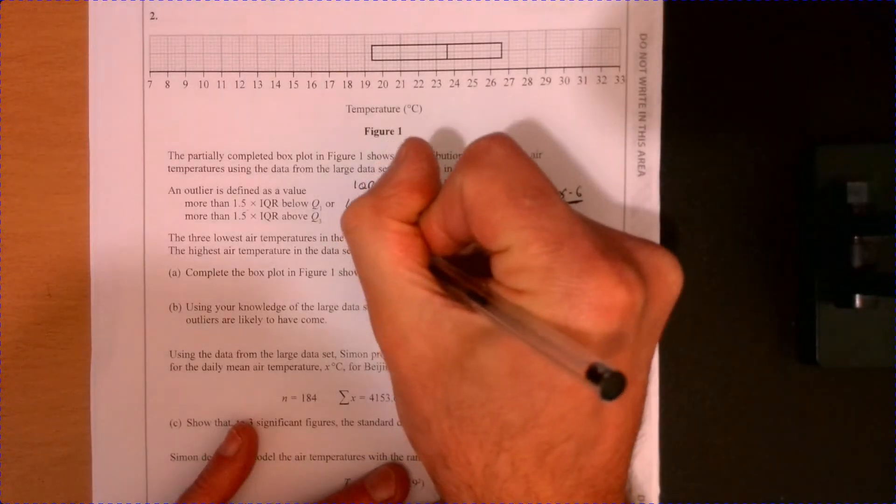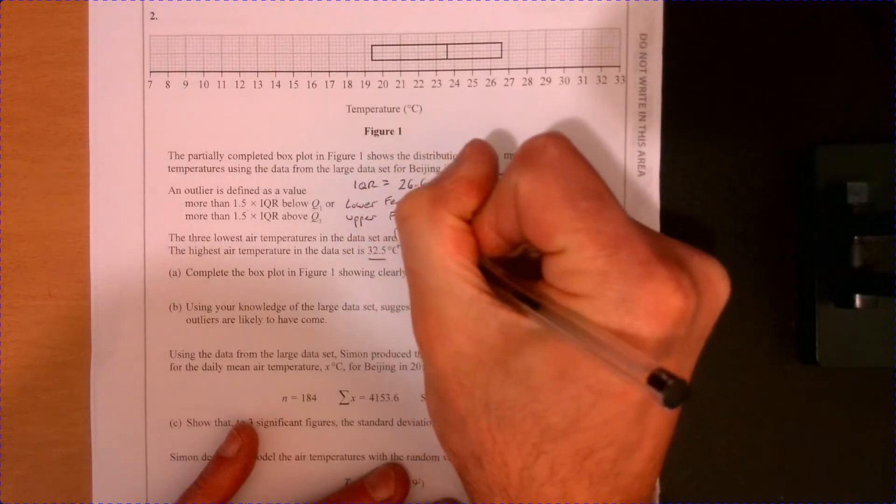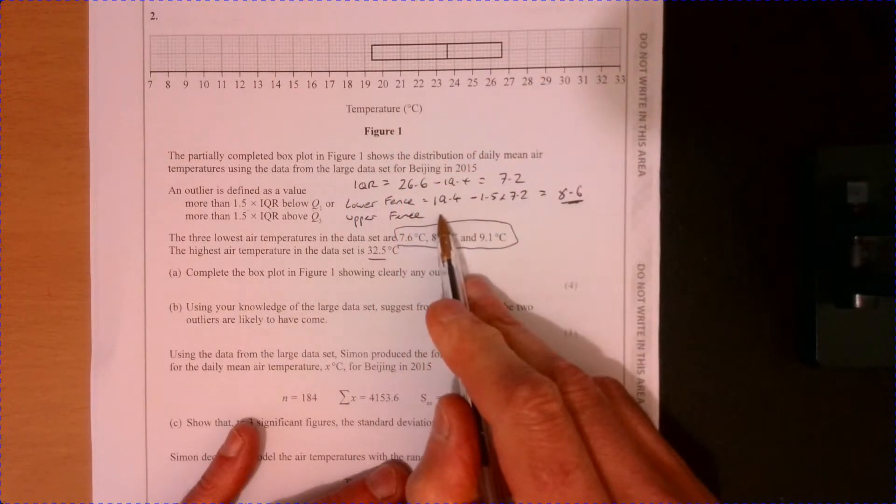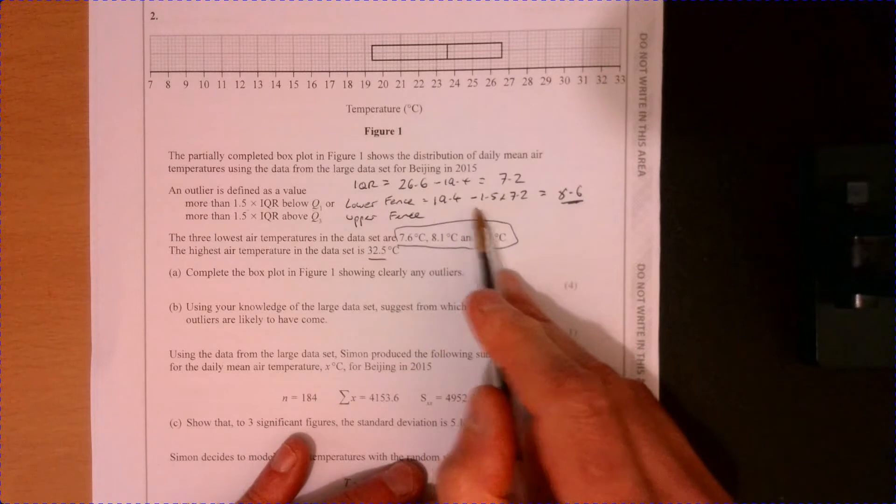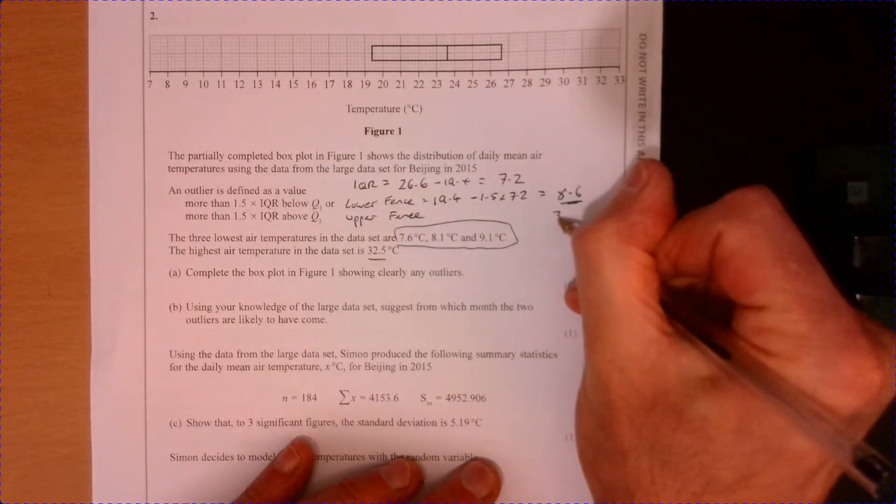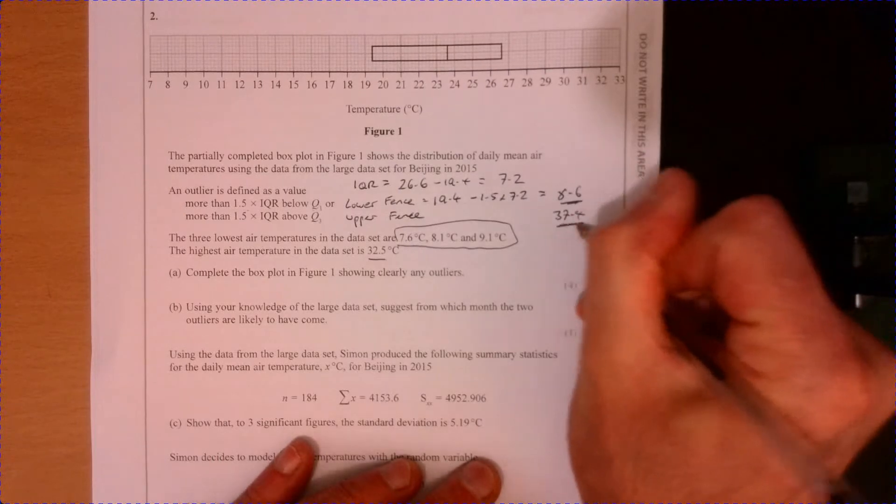I do exactly the same with the upper fence. That's gonna be 26.6 and then add this in. And that gives you 37.4.